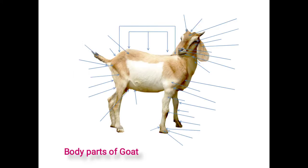The body parts of a ruminant generally have four regions: first is head, second is neck, third is body, and fourth is quarters. First we will see the head region. This is one of the important regions which helps to differentiate the breeds from each other, and the functions and location of different parts of the head region are as follows.